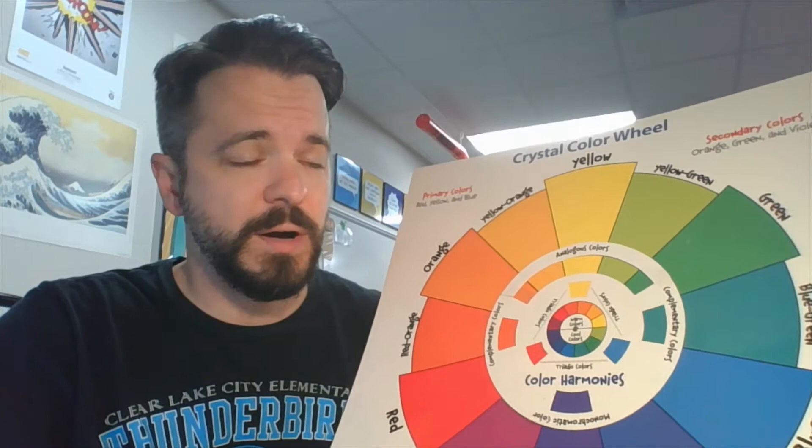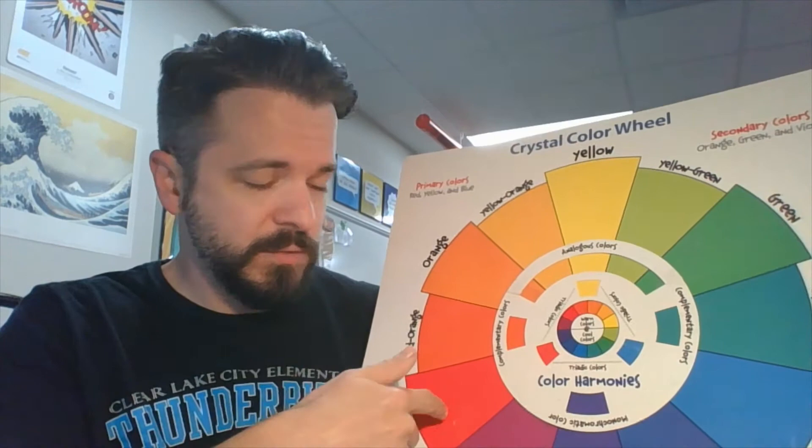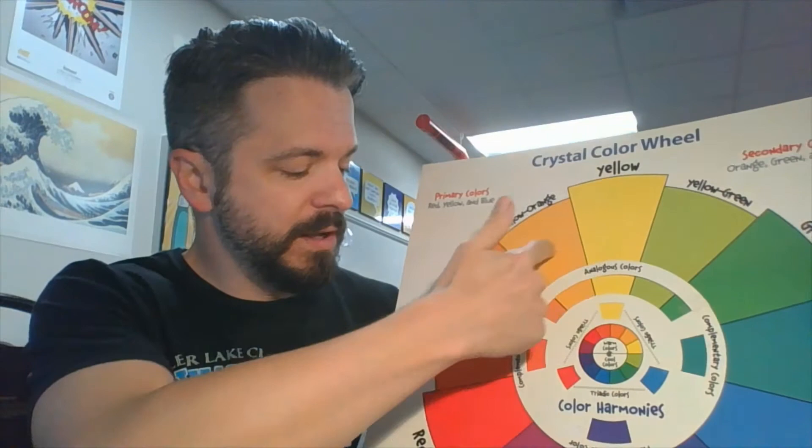So just a reminder, warm colors are colors that remind us of warm or hot things such as yellow like the sun and orange like lava, red like fire. I guess it's all like fire. Anyway, yellow to red,